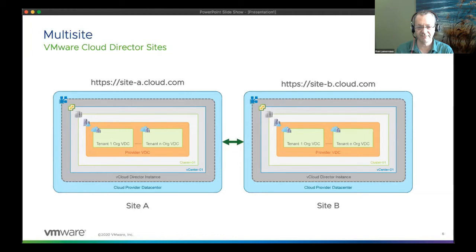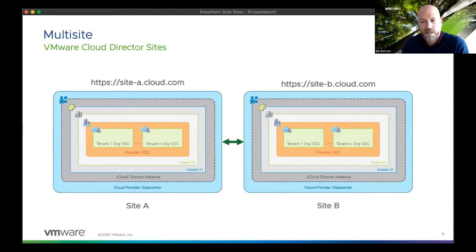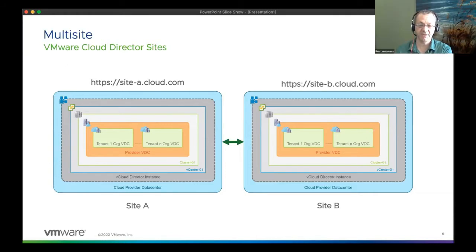This is a nice uplifted service offering for a provider who has customers in multiple geos — for example London and Manchester, two different sites, could be different countries or the same country. For a customer who has presence in both cities, being able to access one URL and have access to all the resources really simplifies things and helps them get a more comprehensive view of their estate within the provider.